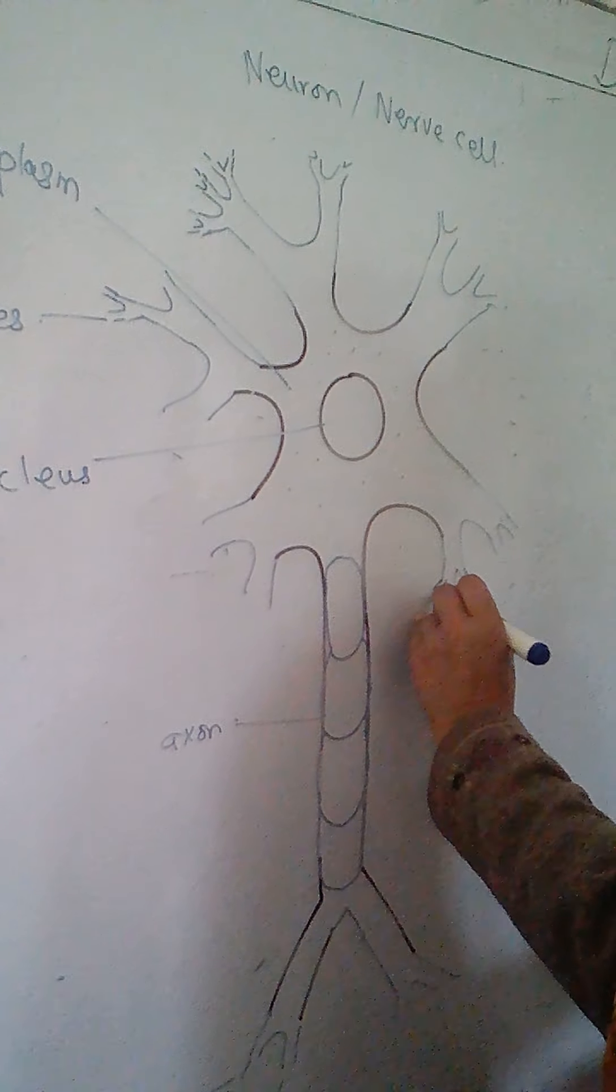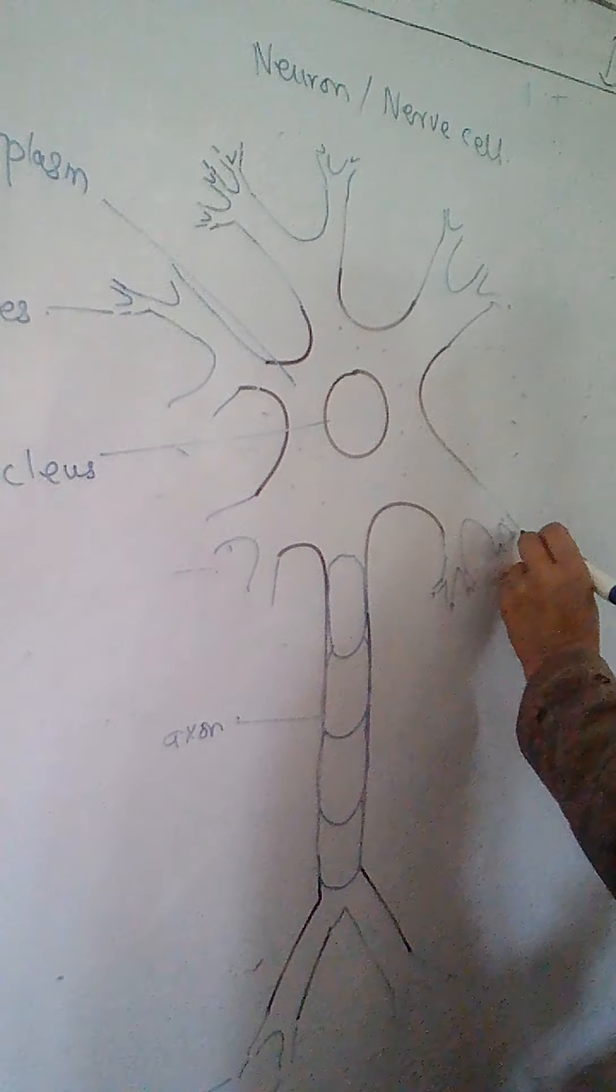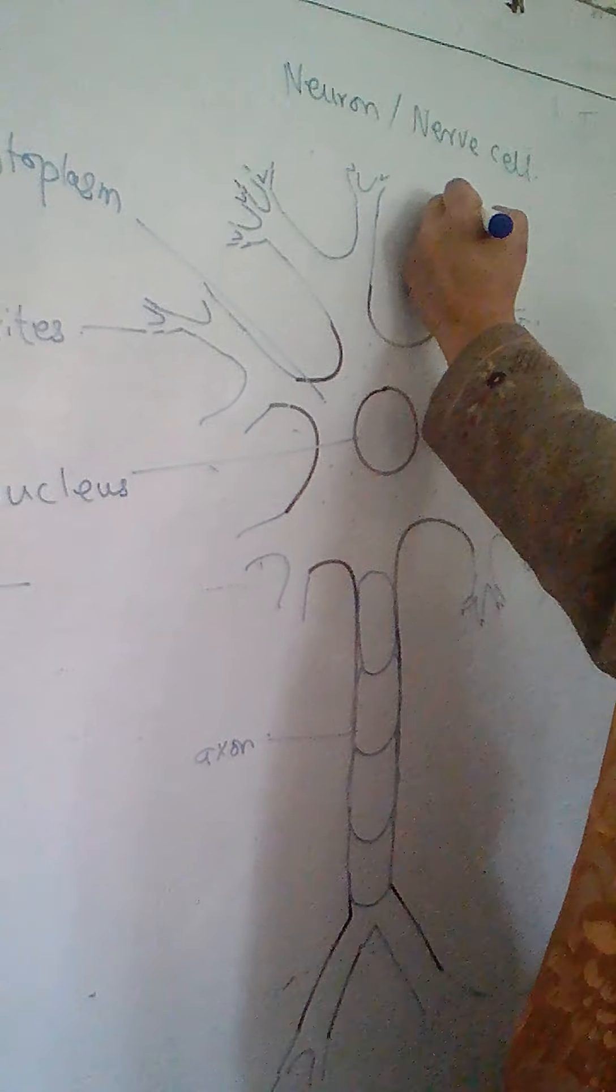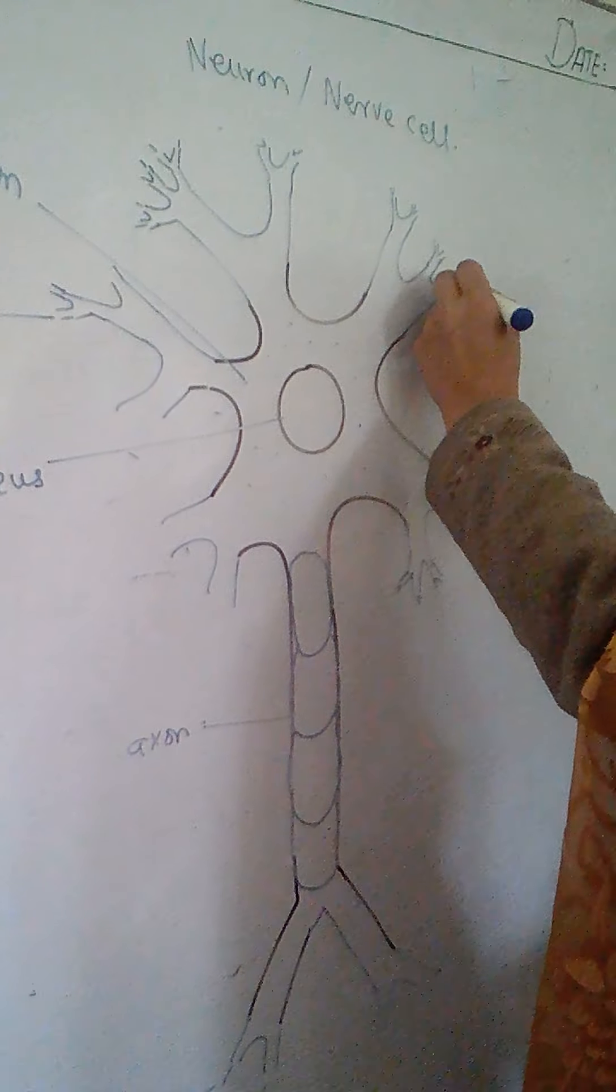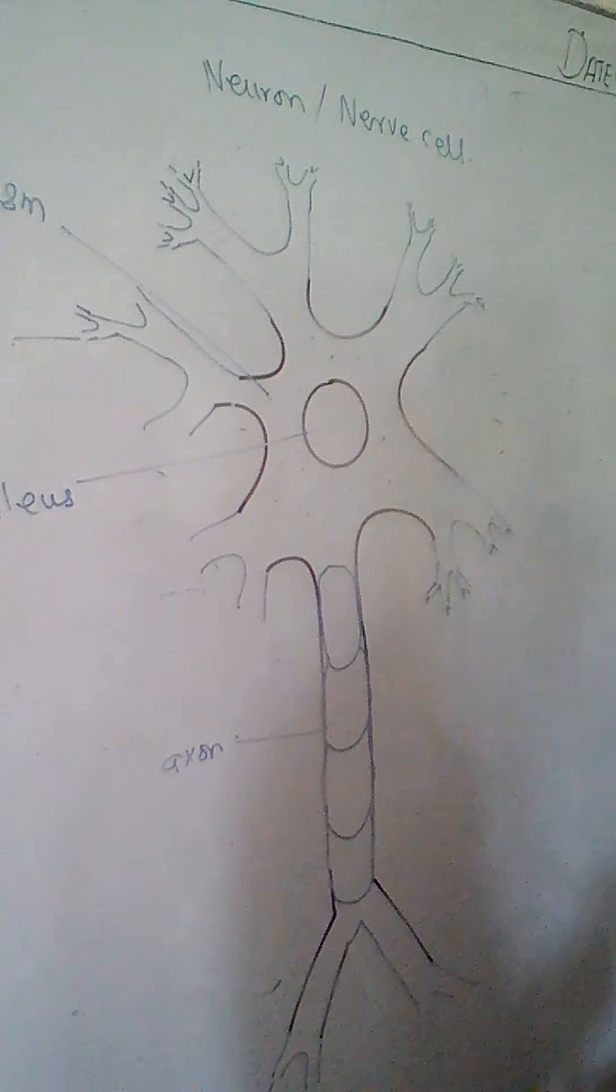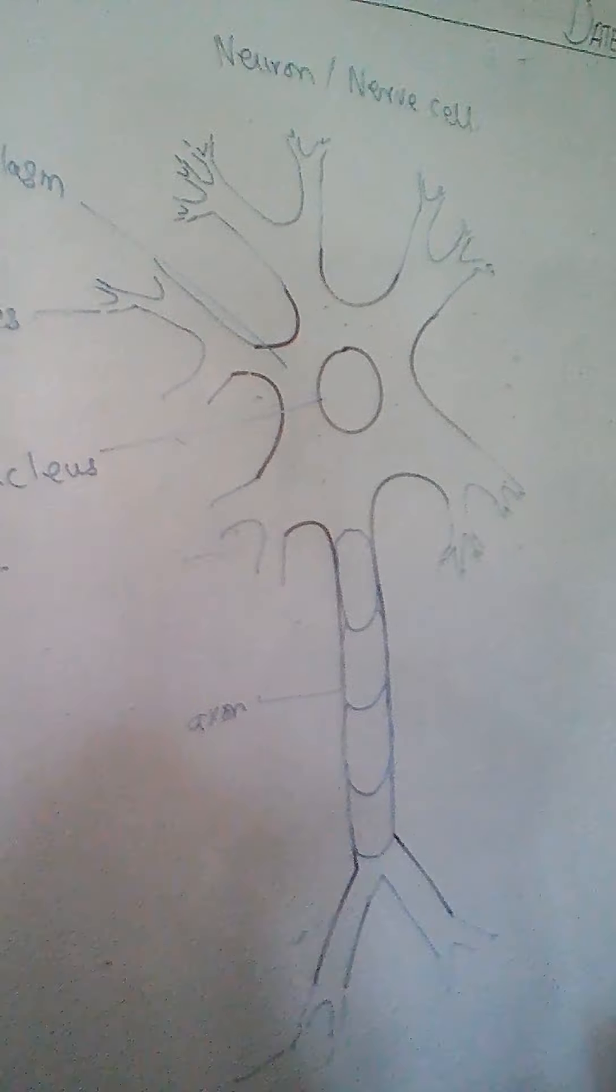And with the passage of time, these dendrites become thinner and thinner, smaller and smaller. These are very sensitive. Their function is to carry the messages. So these are the most sensitive part of the neuron. This is the structure of the neuron.